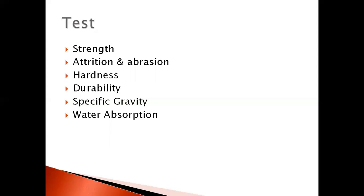In the Mohs scale, hardness is rated from 1 to 10, with different reference materials assigned to each level — at level 10 there is diamond. To test a sample, we scratch it with the material at hardness 1, then 2, and so on. For example, if the sample is strong up to level 4 but at level 5 the sample gets scratched, then the hardness value of the rock is approximately 4 to 5.